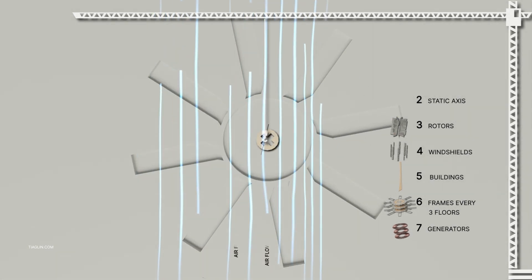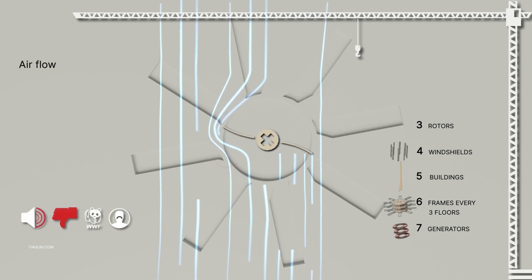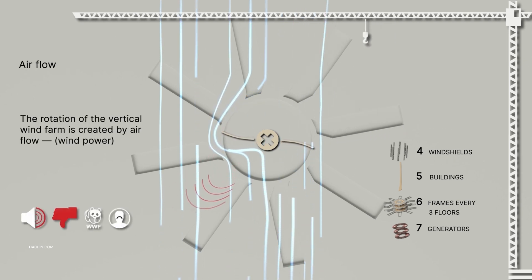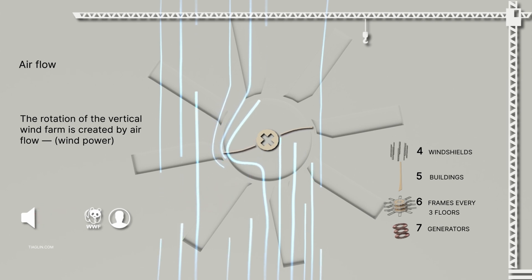Now we will assemble the building sequentially. The vertical wind farm rotation is created by air flow, for example, wind.